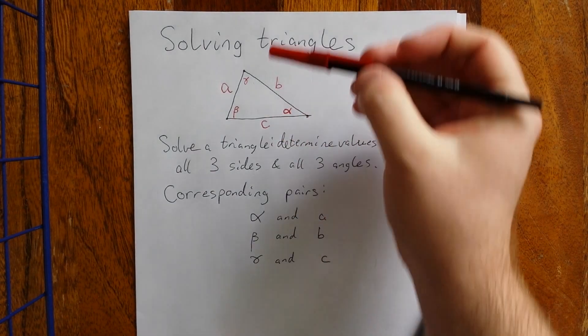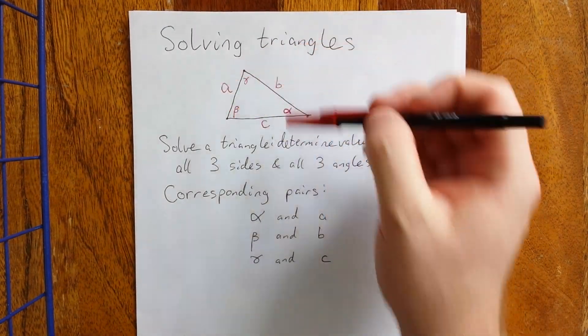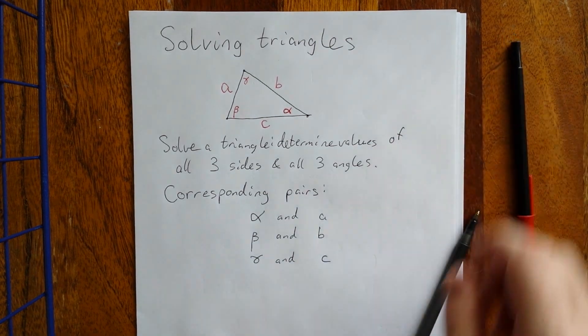In corresponding pairs, the angle-side pair, those are across from each other, and that label is going to be really important. Quick note here.